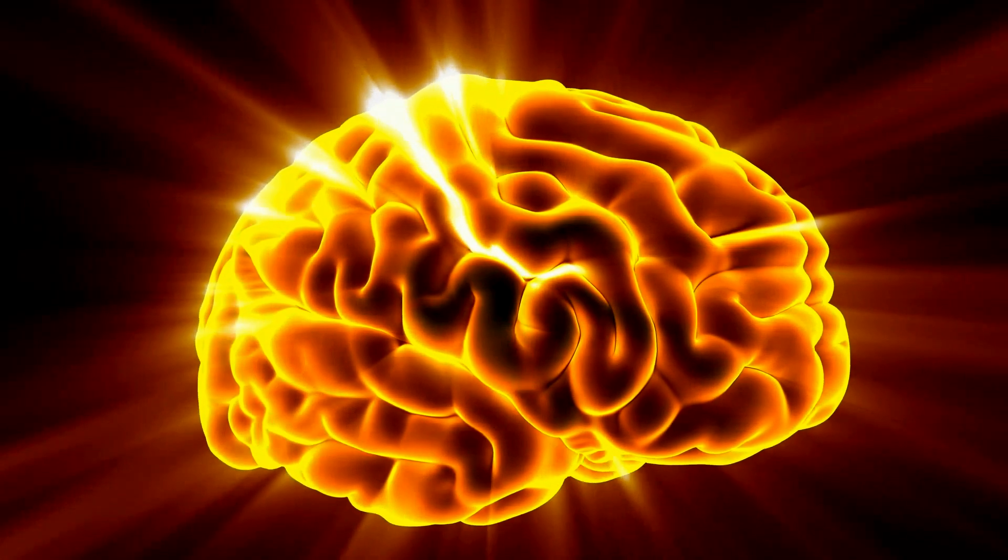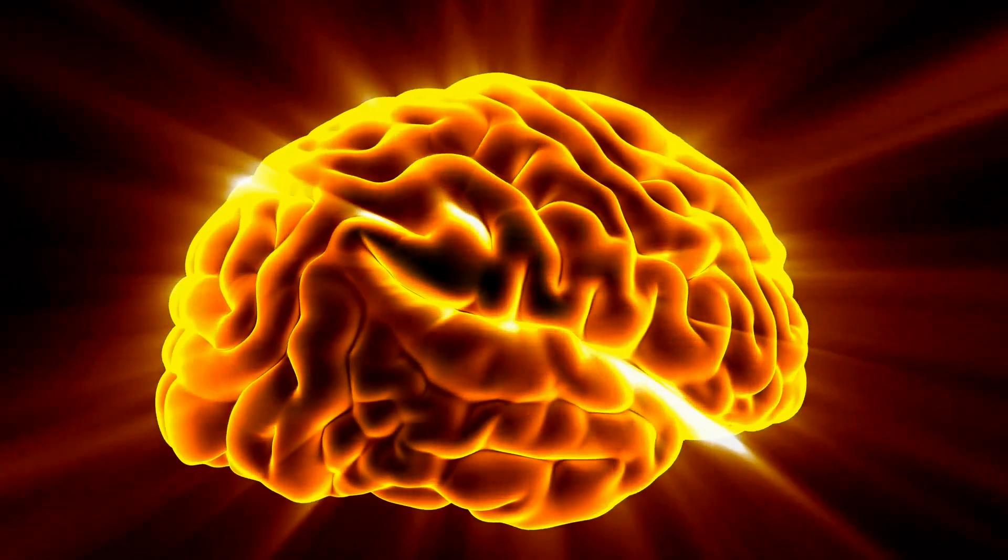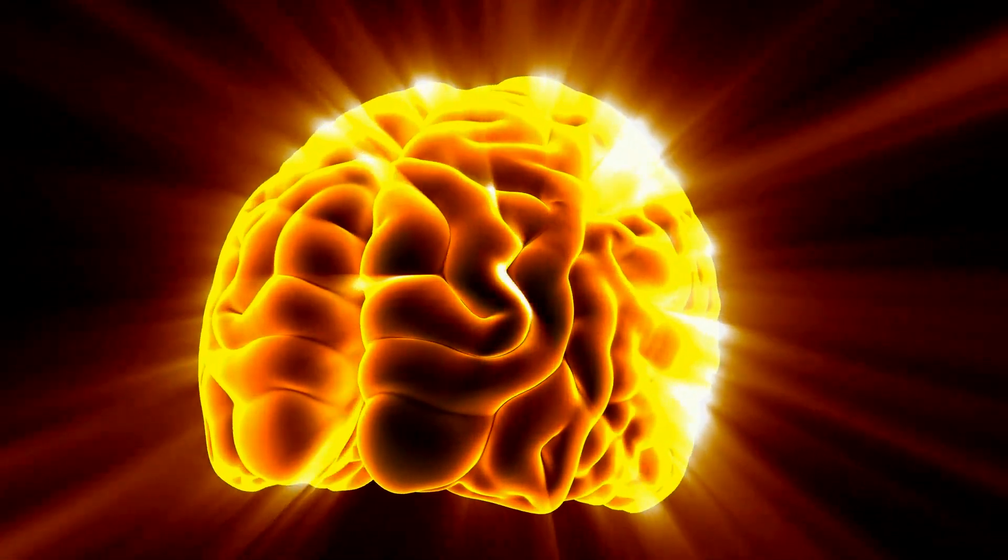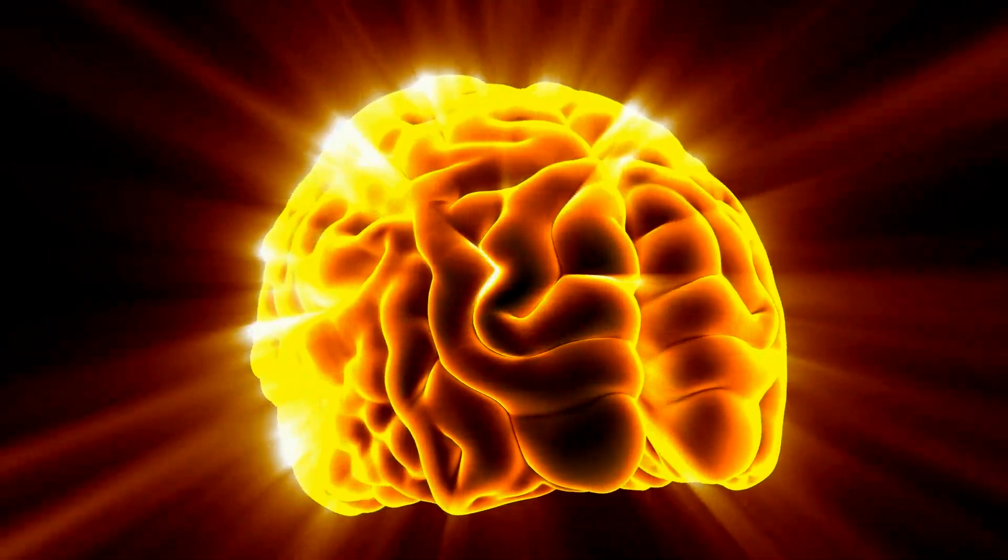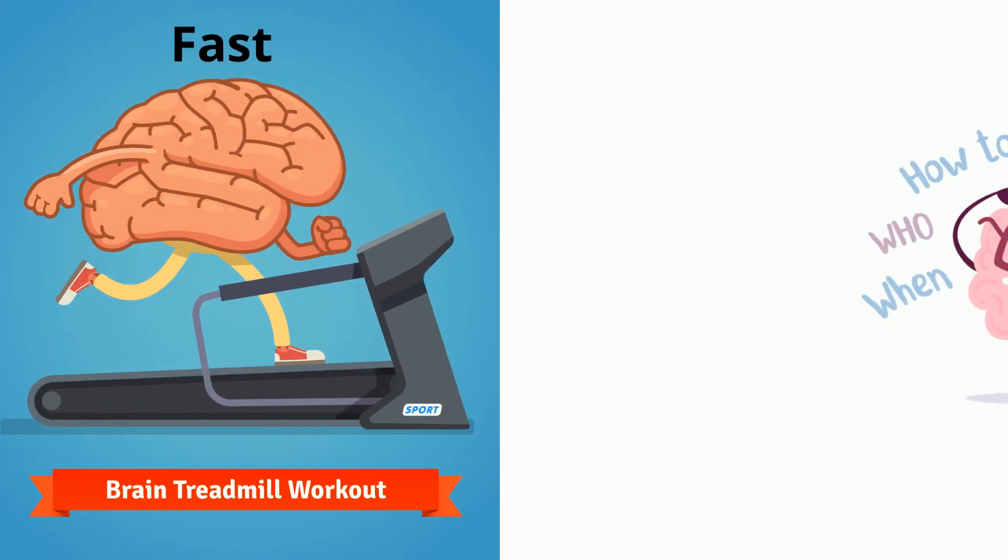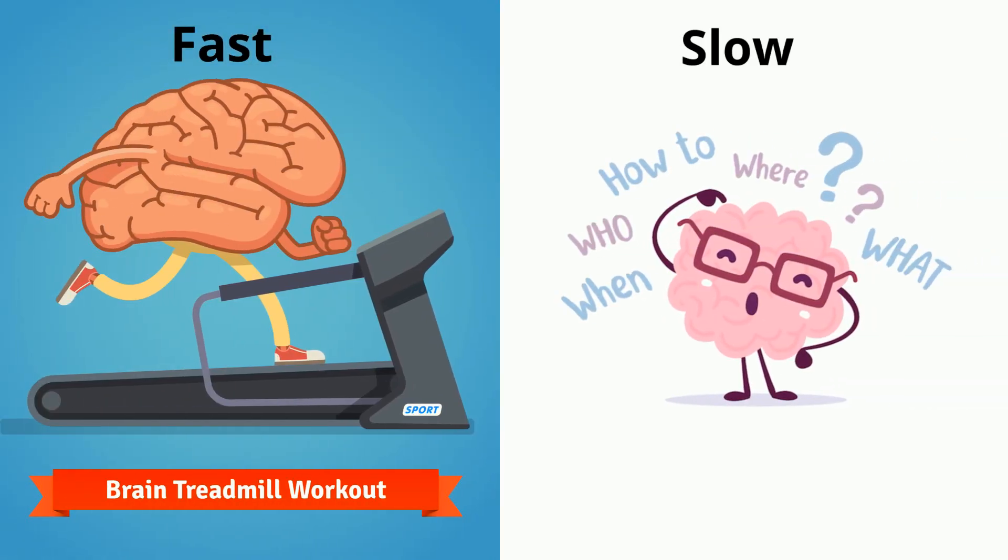Your brain has to process a lot of data constantly. It deals with this data in different ways. Daniel Kahneman proposed that you have fast thinking and slow thinking. I'll give you an example.